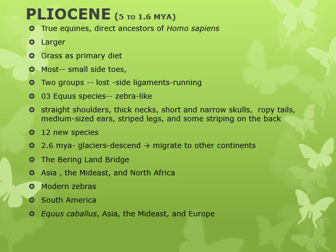Late in the Pliocene, about 2.6 million years ago, glaciers began to descend in North America and horses began to migrate to other continents. They probably crossed over the Bering land bridge between what is now Alaska and Russian Siberia. Some spread across Asia, the Middle East, and North Africa, while some entered Africa and diversified into modern zebras. Other species spread into South America, while the true horse Equus caballus spread into Asia, the Middle East, and Europe.